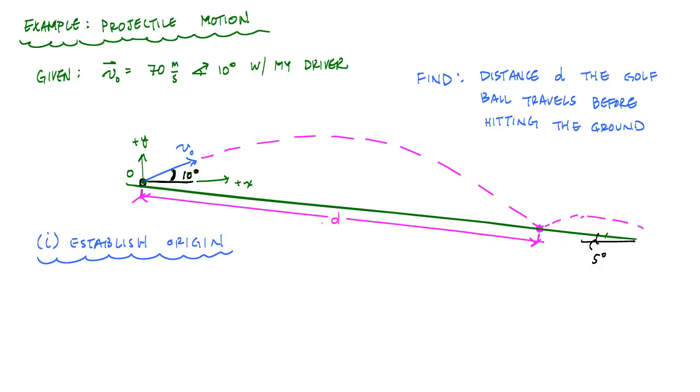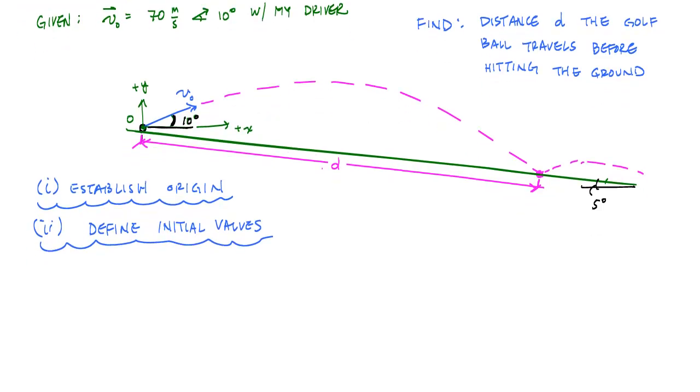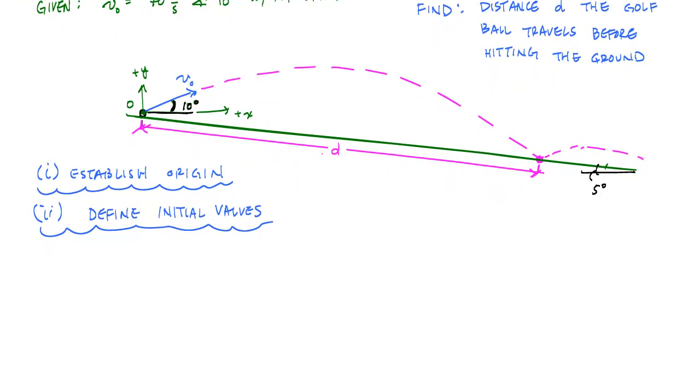And so once I've established my reference, then I can go ahead and set up or calculate, define some initial values. And these initial values are things like the velocity in the x direction, v0x. So it's the x component of this velocity here, which is just, or the magnitude of this x component of velocity is v0 cosine of 10 degrees. And then I have v0y, the y component of this is v0 sine of 10 degrees. And all this means is I'm just taking this velocity vector and breaking it up into my x and y components right here.